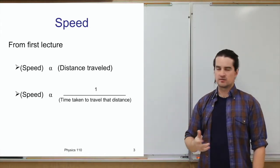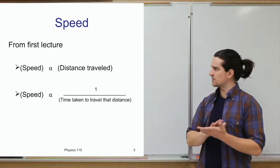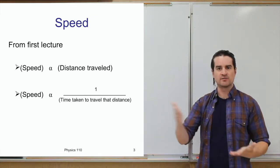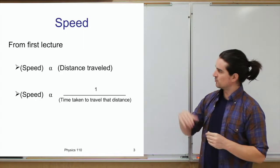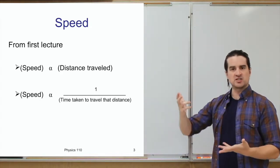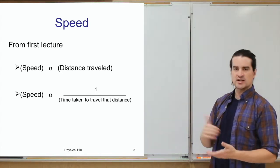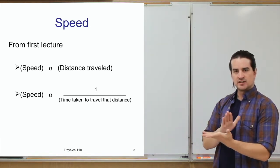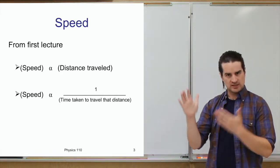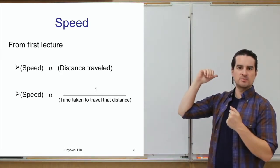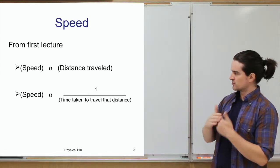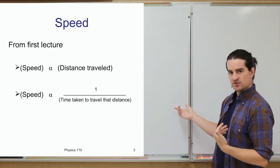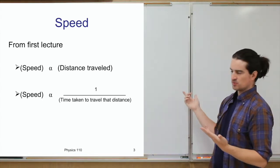Bringing this back to proportional relationships: the speed of an object describes how quickly it's moving. Speed is proportional to the distance the object travels and inversely proportional to the time it takes. If you go a much further distance in the same amount of time, that's a greater speed. If you go the same distance but it takes you twice as long, that's a slower speed.